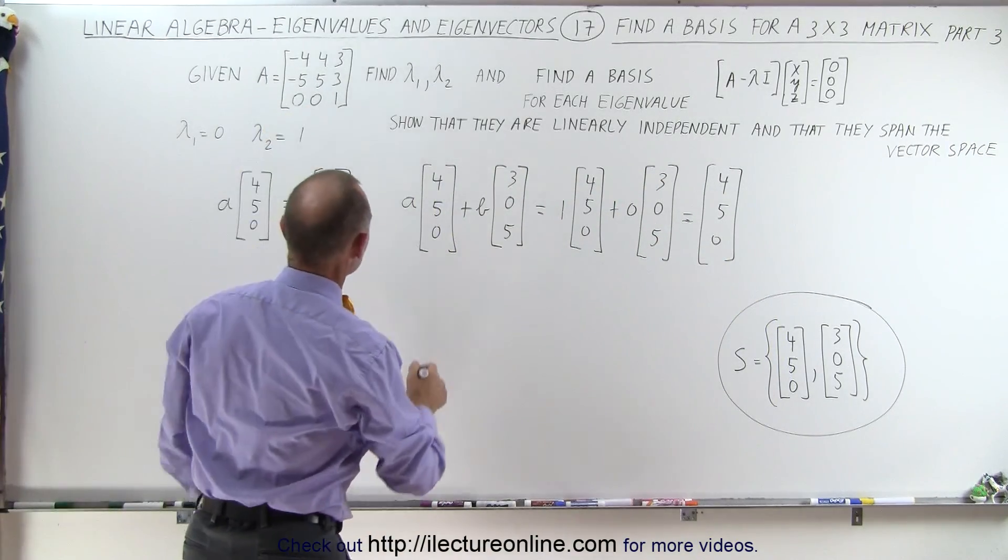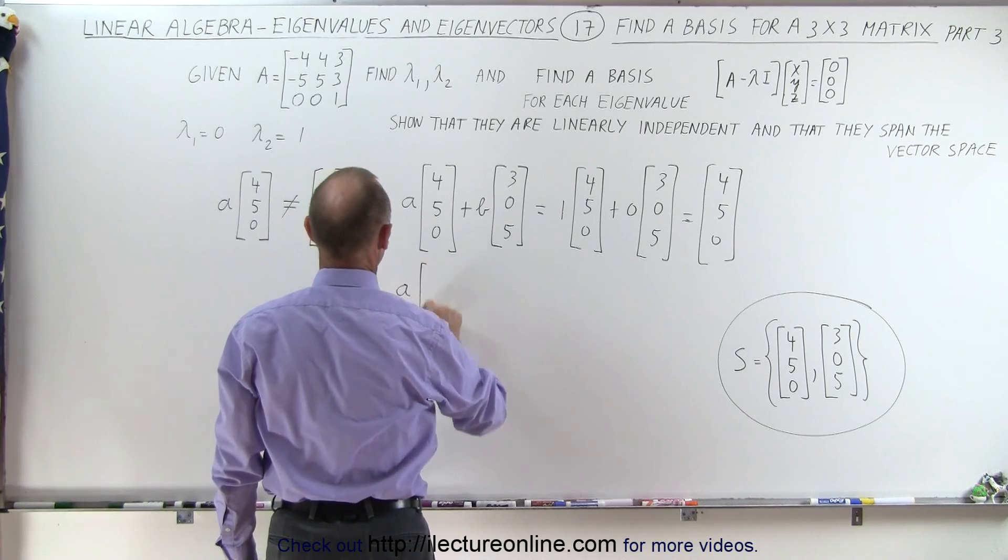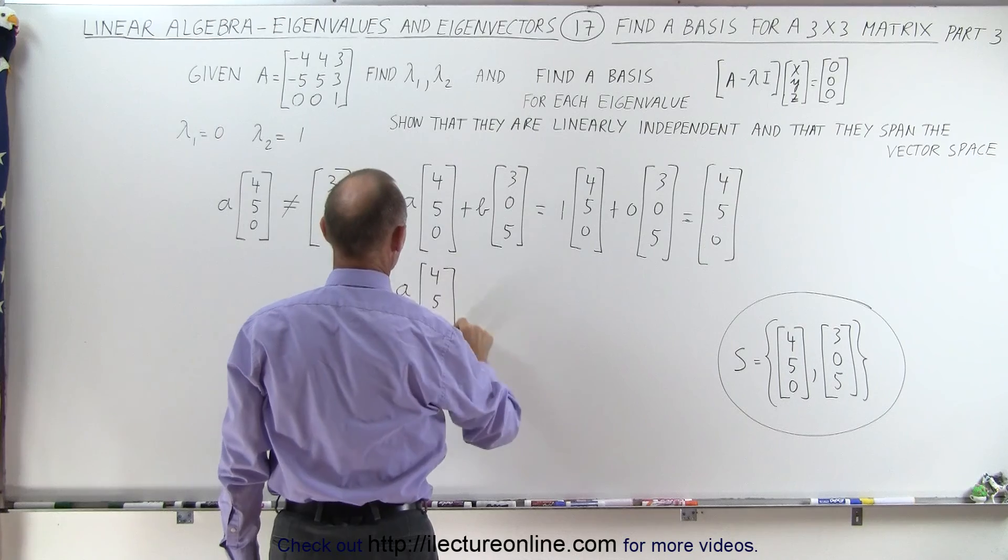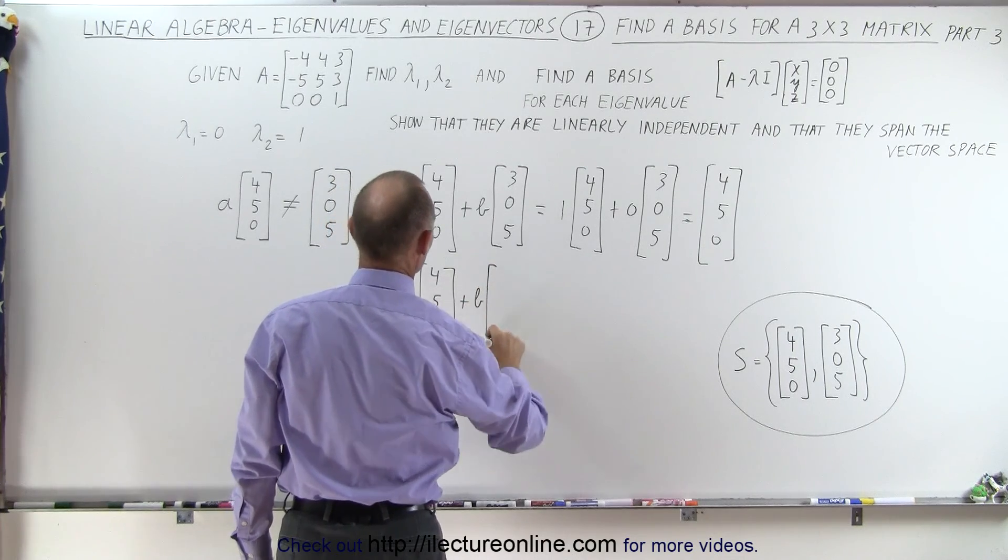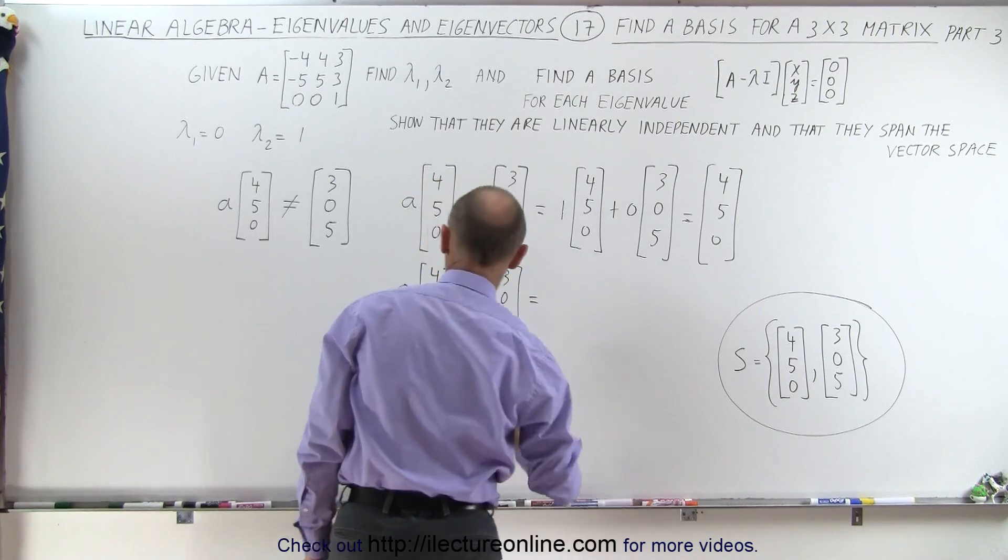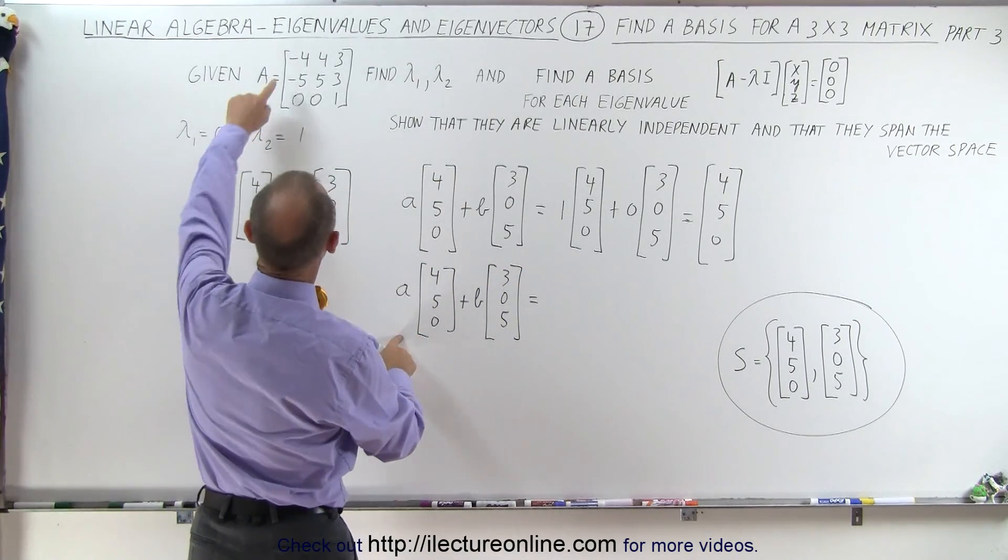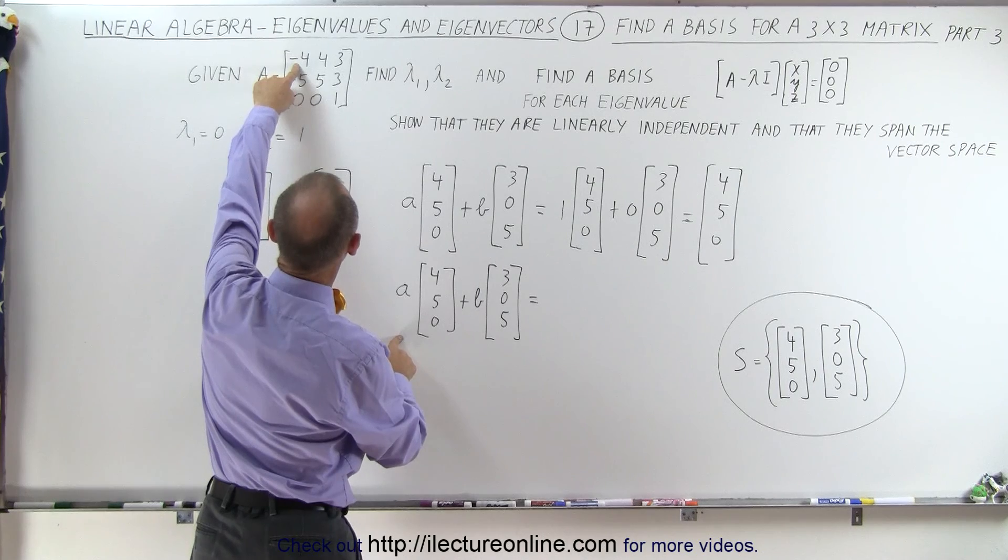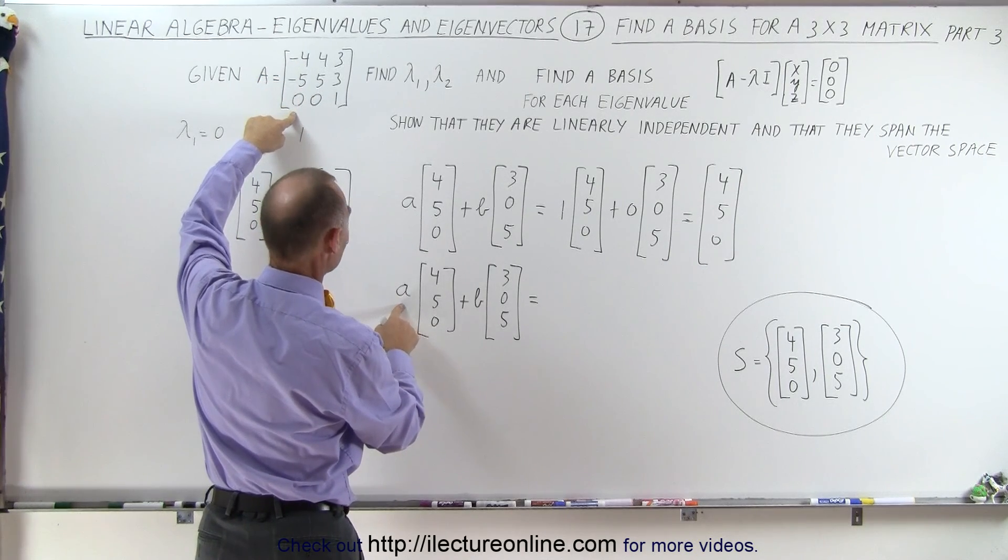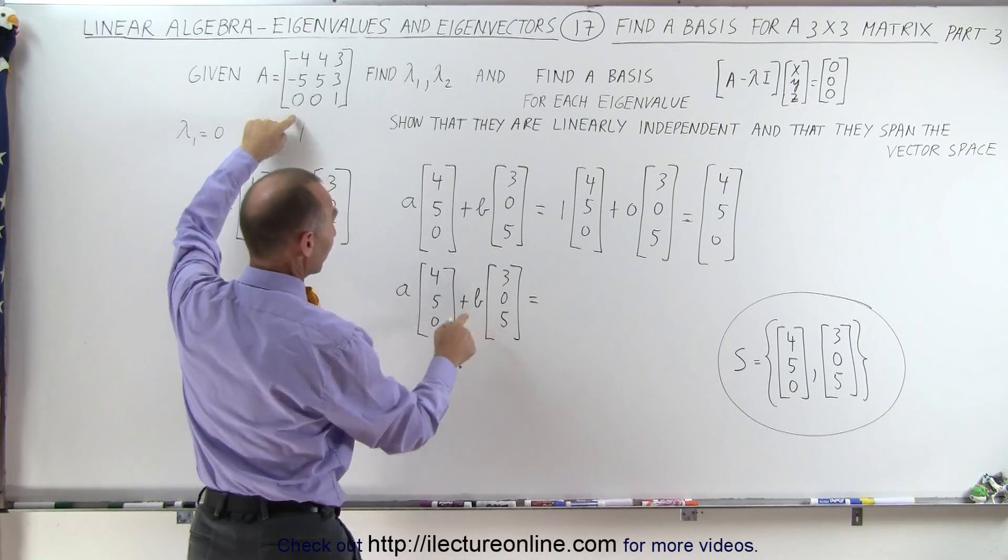Now let's go for the first one here. So a times [4, 5, 0] plus b times [3, 0, 5] equals... I'm trying to get [-4, 5, 0]. Well that means that a can be negative 1 and b can be 0 and I get the first column.